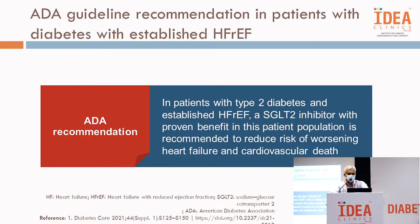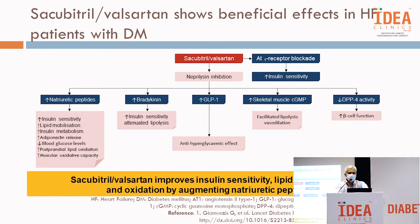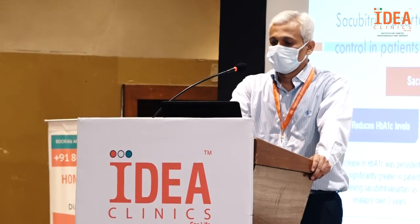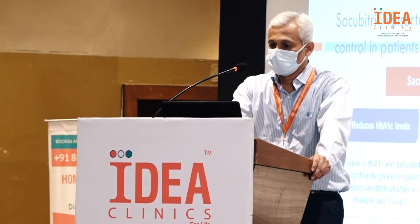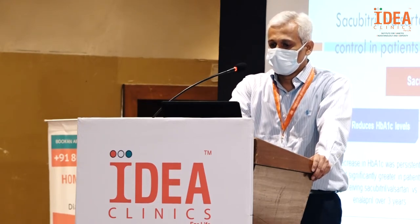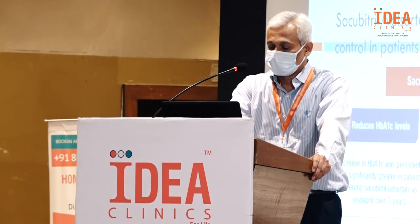The ADA recommendation now is to start SGLT2 inhibitors in patients with heart failure, as they have recently shown mortality benefit and are used as add-on therapy to existing guideline-based medication. When starting or escalating SGLT2, monitor the concomitant diuretic dose — patients on three to four diuretics plus SGLT2 can develop electrolyte disturbances including potassium and magnesium loss, leading to arrhythmias and increased risk of sudden cardiac death.